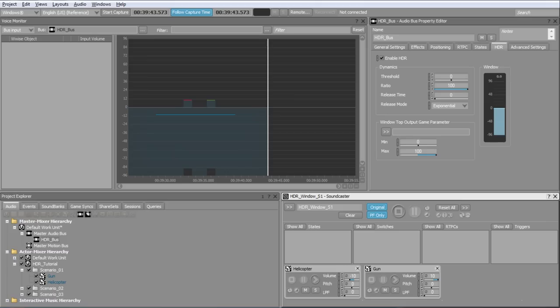Second, the volumes for the helicopter and gun in the Voice Monitor display minus 19.9 and 0.1 dB, instead of minus 20 and 0 dB, as expected. These rounding imprecisions are due to the fact that the HDR bus ratio is set to 100 to 1 and not infinite to 1.